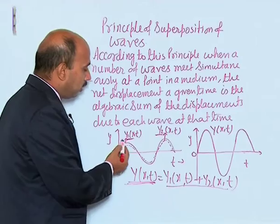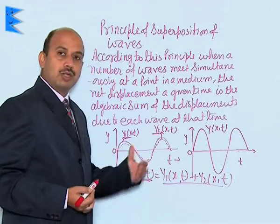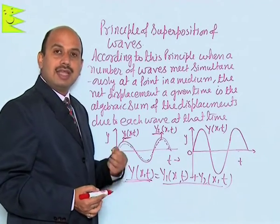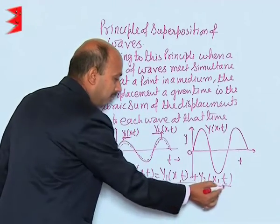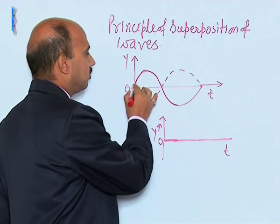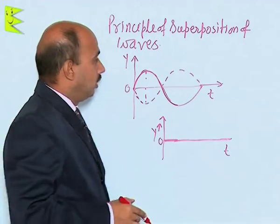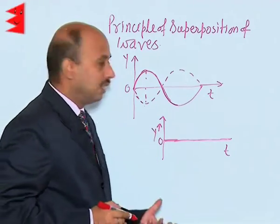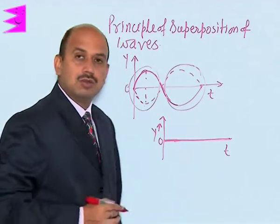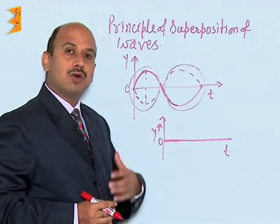This is the total displacement of the wave at any time t when these two are superimposing, and the net displacement is the sum of these two. When the crest falls on the crest of another wave, the amplitude is increasing because they are added up. When the trough of one wave falls on the trough of another wave, the amplitude is also increasing but with the opposite sign. Now see another example where the two waves superimpose with equal amplitude such that the crest of one wave falls on the trough of another wave. In that case the net displacement will be 0, and the resultant wave has 0 displacement.